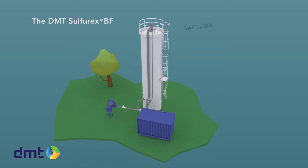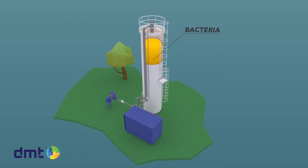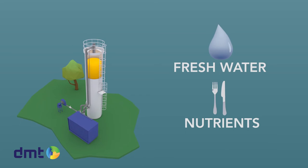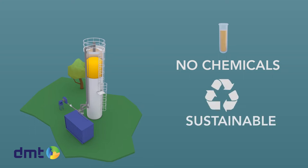This system removes H2S from biogas using bacteria. The process only requires fresh water and some nutrients to operate. Since the Sulphurex is a biological process, no chemicals are required, which makes it a sustainable system with a low carbon footprint.